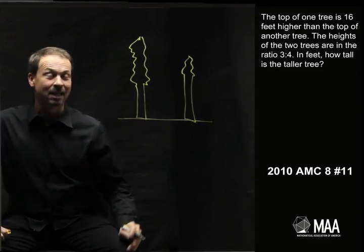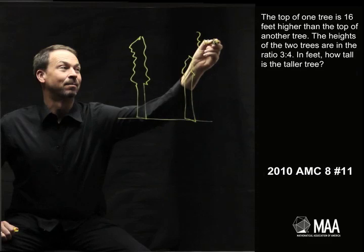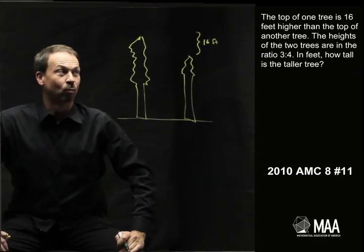But we're told in the question one is 16 feet taller than the other. So I guess this distance here is 16 feet. And we're also told that the heights of the trees come in a three to four ratio.